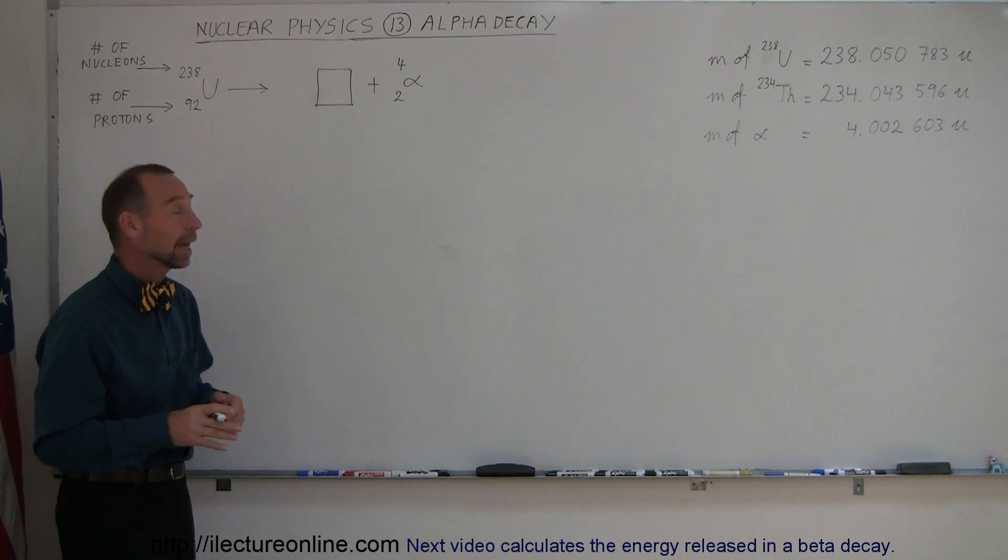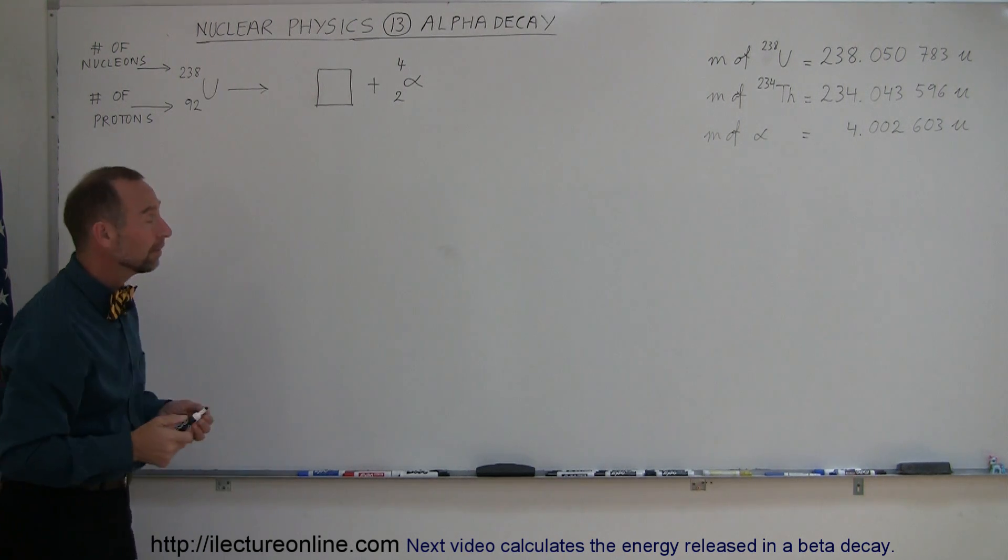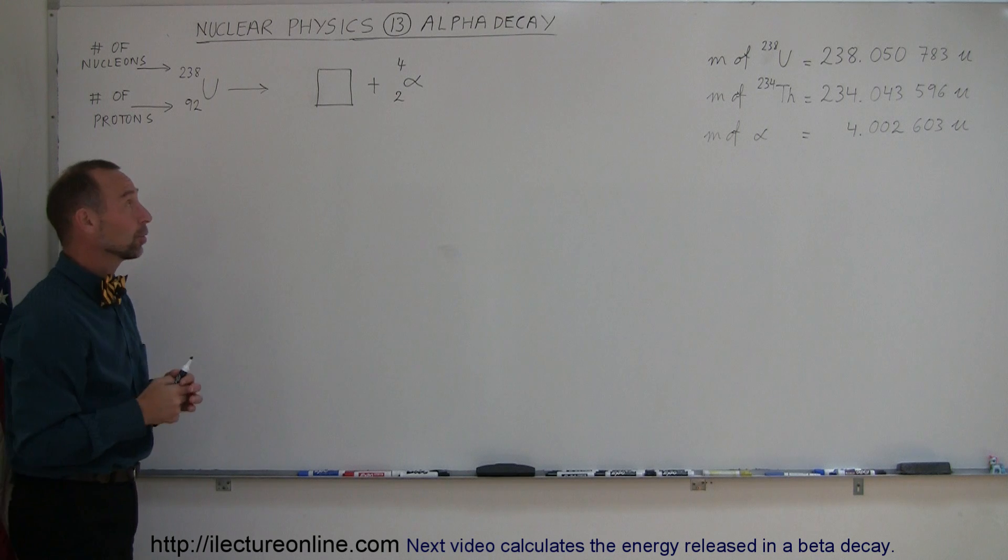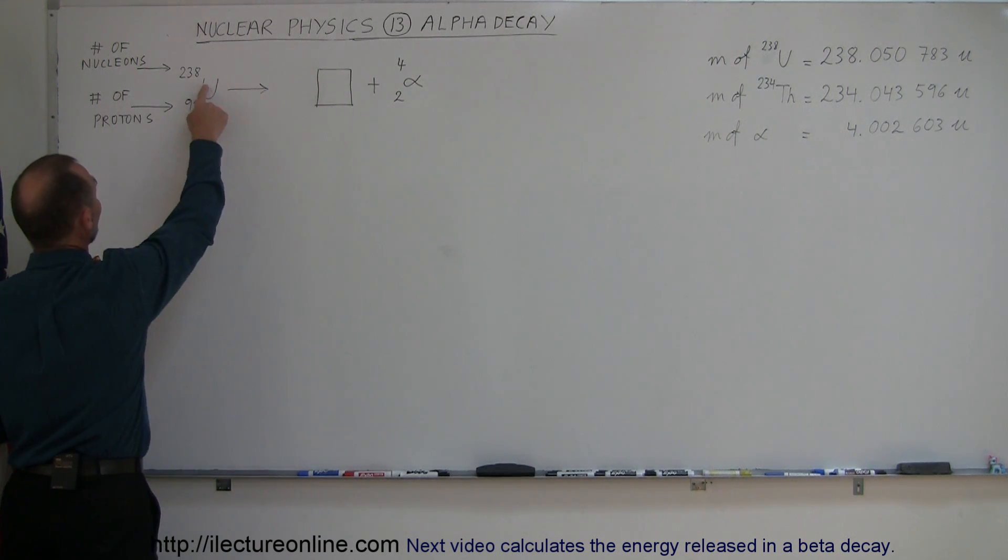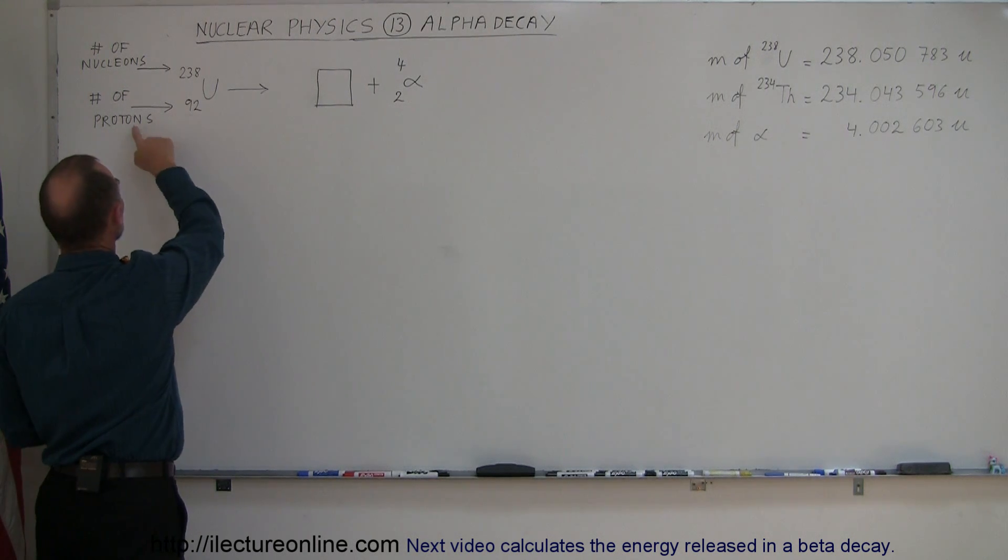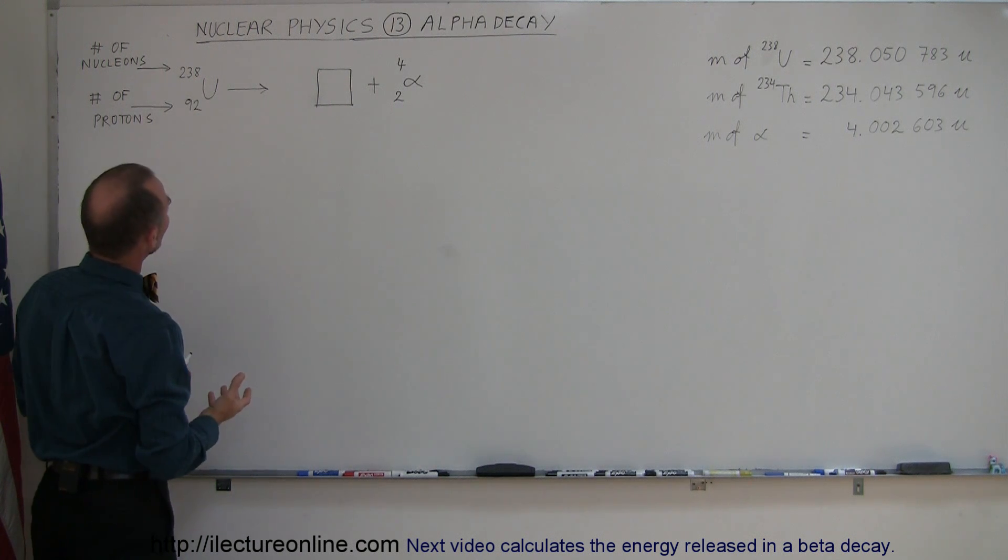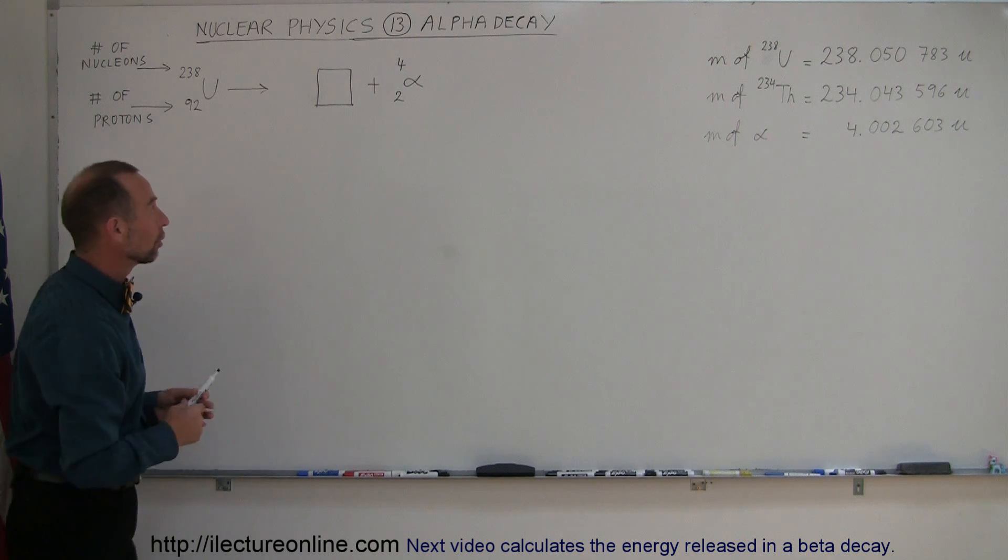So what is an alpha decay? Well, first of all, there are a lot of heavy elements like uranium-238. And by the way, when we say uranium-238, what we mean is that the nucleus has 238 nucleons, which is a combination of protons and neutrons, and 92 protons. So if you subtract 92 from 238, which looks like 146, that's the number of neutrons you have in the nucleus.